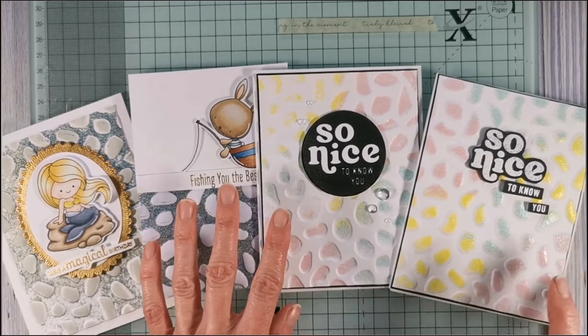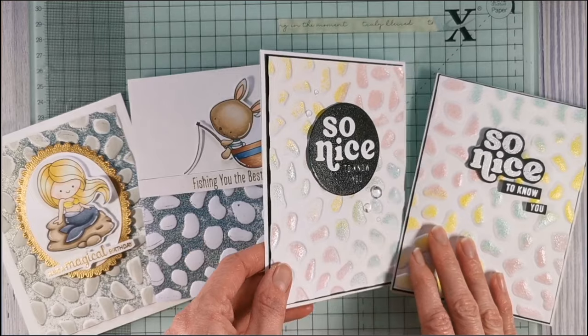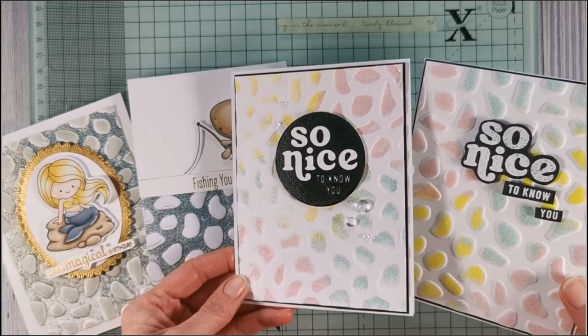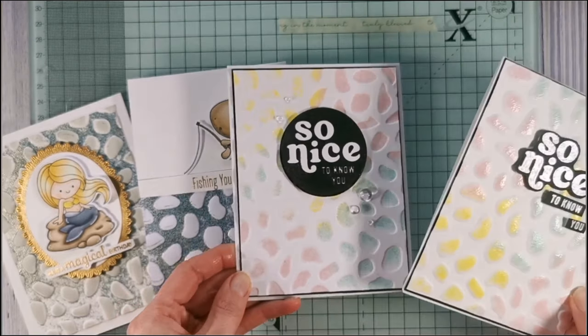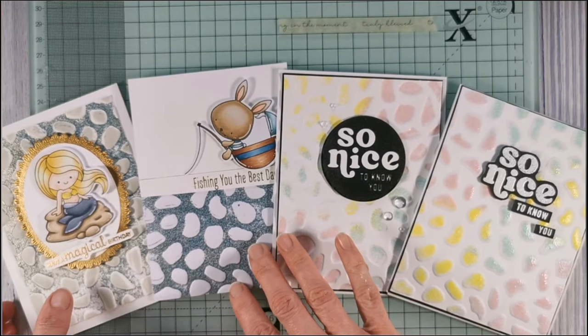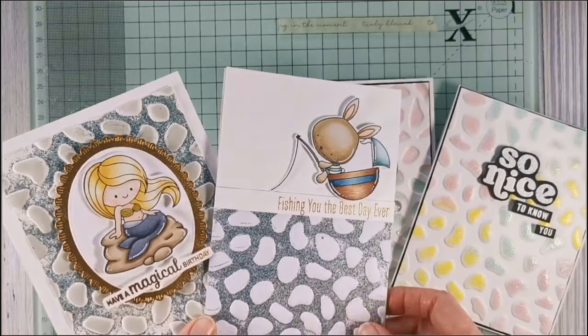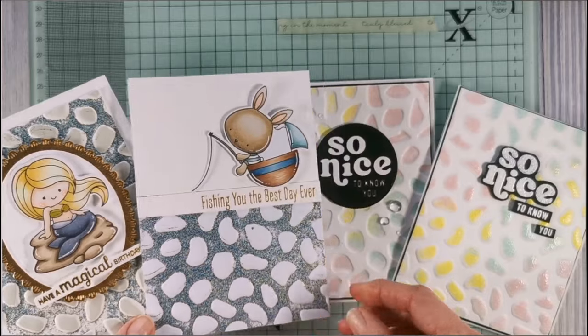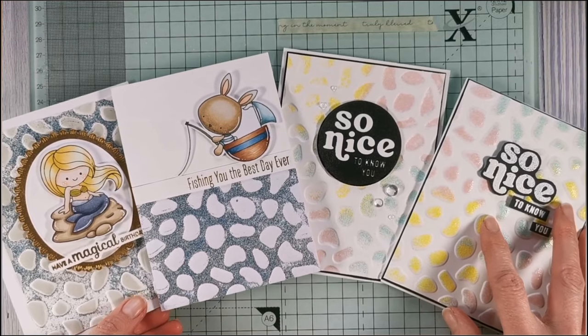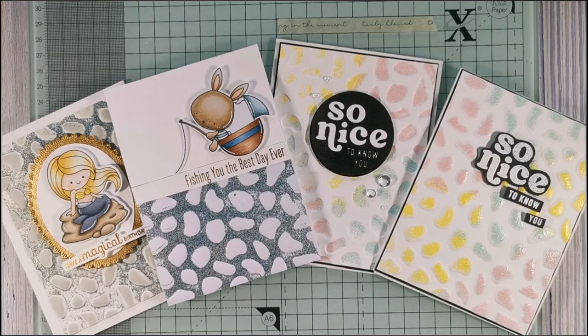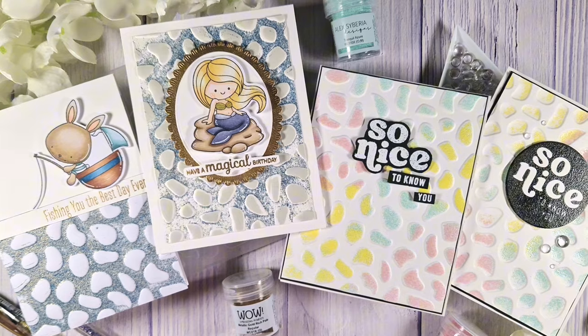So you've got your critter cards if you like on one side, and then you've got something which involves more die cutting and is kind of more abstract on the other side. So whatever is your go-to style, hopefully this is a technique which you can apply to your card making. So I really hope you've enjoyed today's video. If you have, please do hit the like button and don't forget to subscribe to get some more inspiration from our amazing design team.